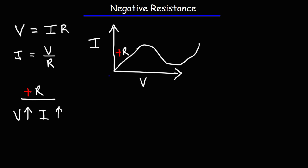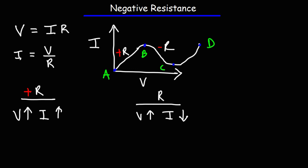So let's label four different points here — we'll call them A, B, C, and D. Between point A and B we have a positive resistance region: when the voltage goes up the current goes up. But between points B and C, that is a negative resistance region, because when the voltage goes up the current goes down. So we see this inverse relationship between voltage and current in the negative resistance region.